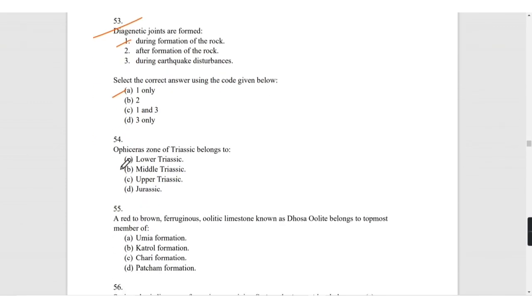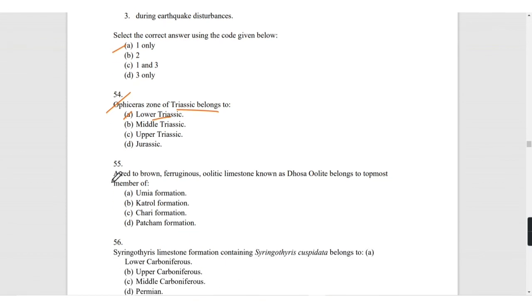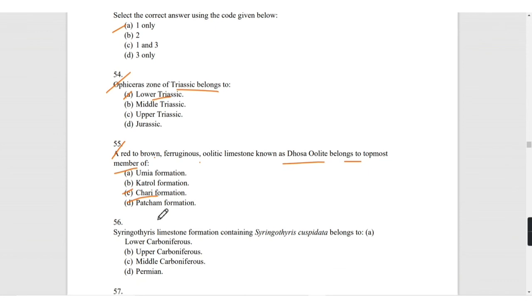Otoceras zone of Triassic belongs to the lower Triassic. These are factual questions. A red to brown ferruginous oolitic limestone known as Dosa oolite belongs to the topmost member of Cherry formation. For this you have to remember the stratigraphy of Cherry formation.